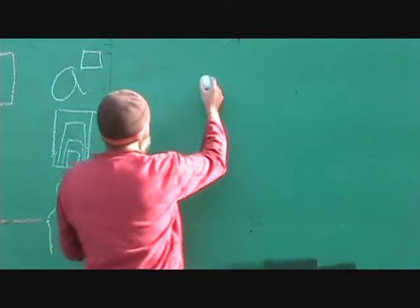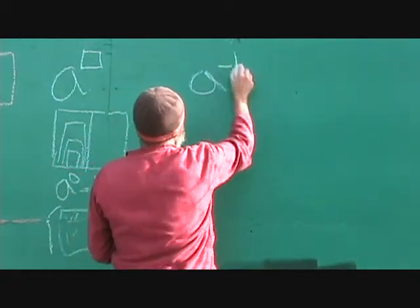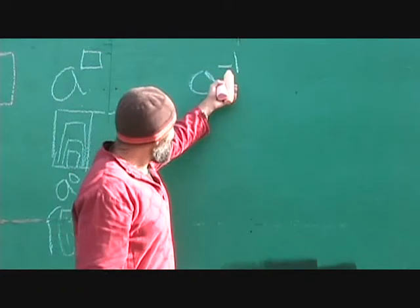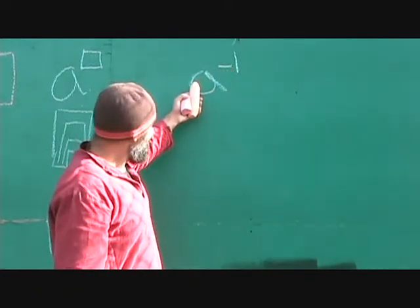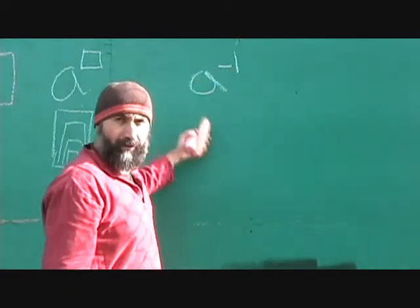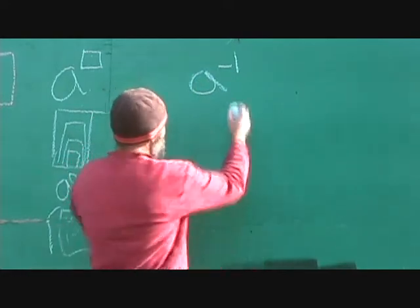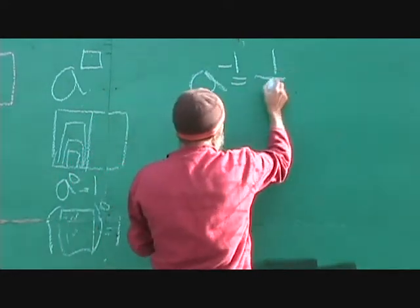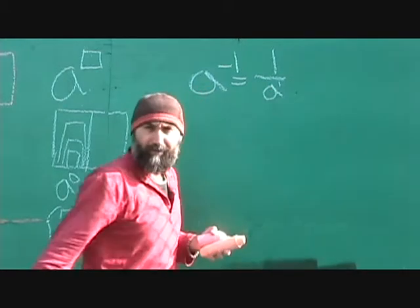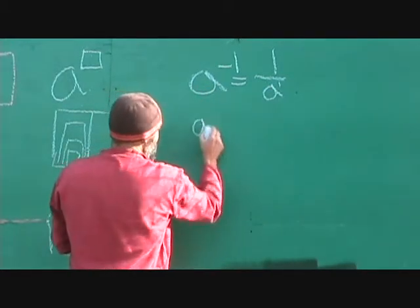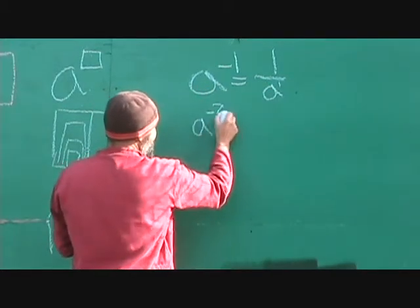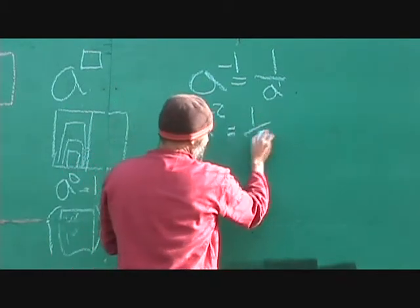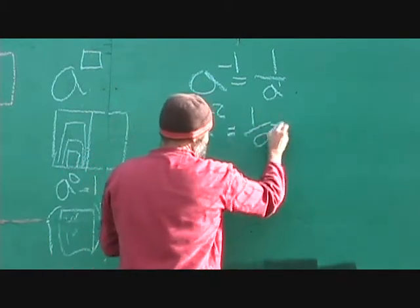Negative numbers in exponents: a to the power of negative 1. A negative power means if the number is on top, you kick it down. So this means it goes down to 1 over a to the power of 1. So if you had a to the power of negative 2, this would be 1 over a squared.